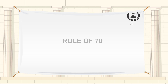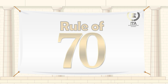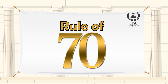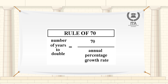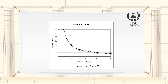The Rule of 70 provides a simple way to calculate the approximate number of years it takes for the level of a variable growing at a constant rate to double. The Rule of 70 states that in order to estimate the number of years for a variable to double, take the number 70 and divide it by the growth rate of the variable. This rule is commonly used with an annual compound interest rate to quickly determine how long it would take to double your money.